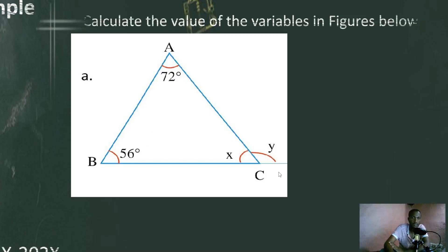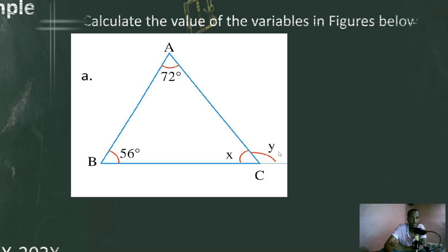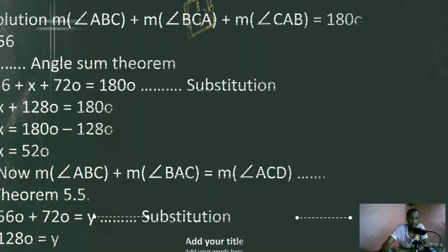They are equal. So angle Y equals 56 plus 72, or angle CAB plus angle CBA. Whenever you get this type of question, you can use that method: 56 plus 72 gives you the value of angle Y — Y equals 128 degrees. That's how we find it.